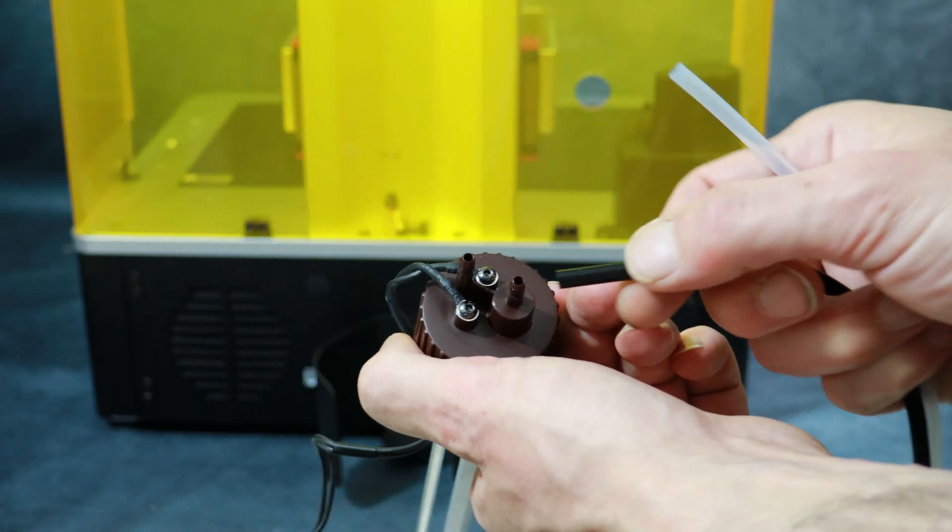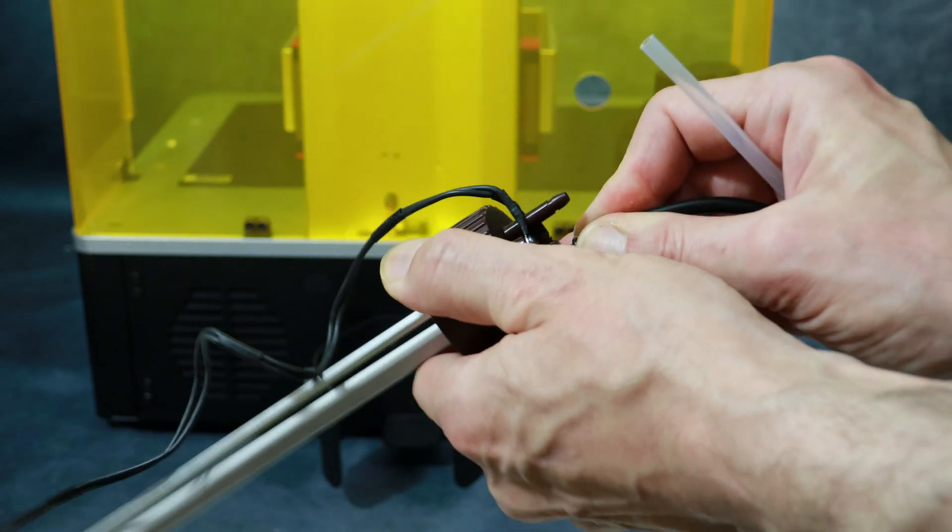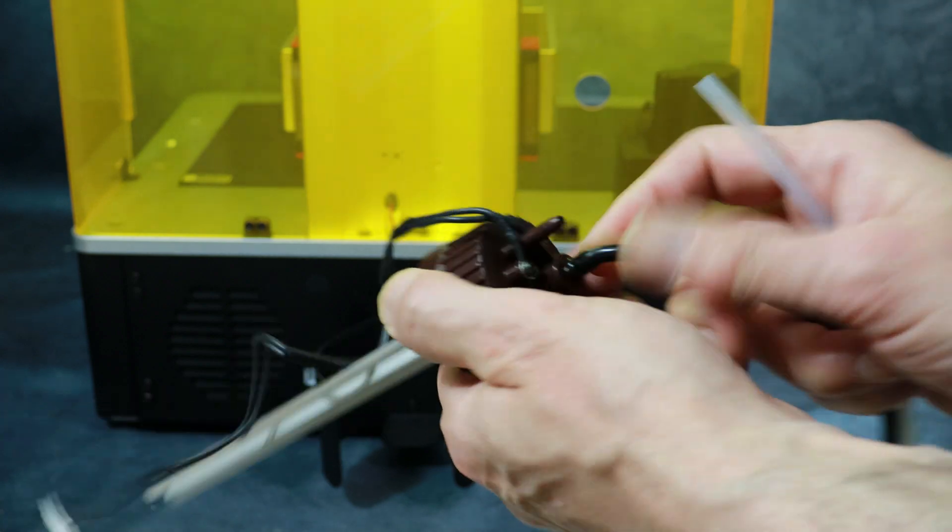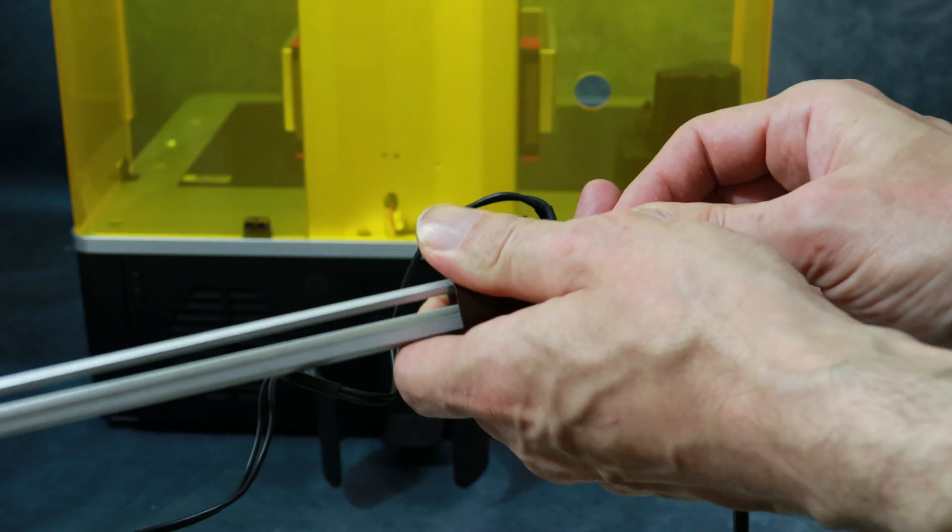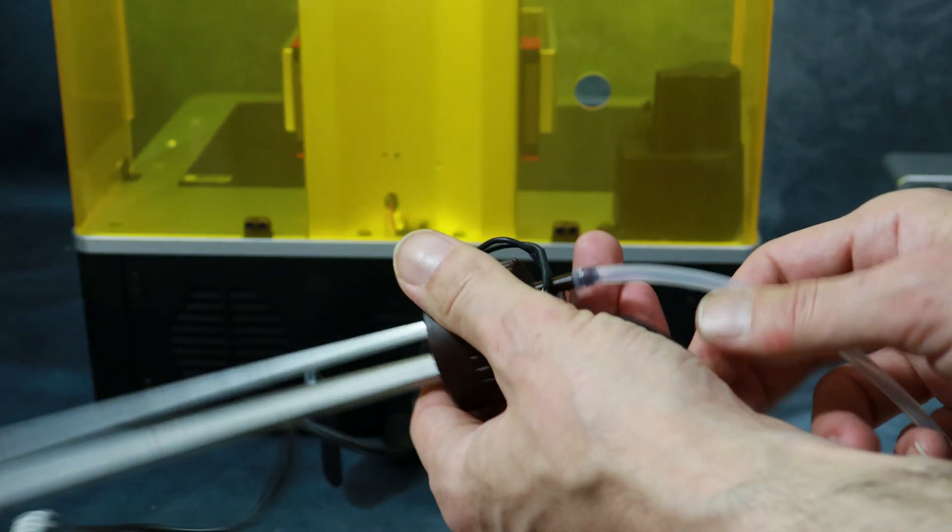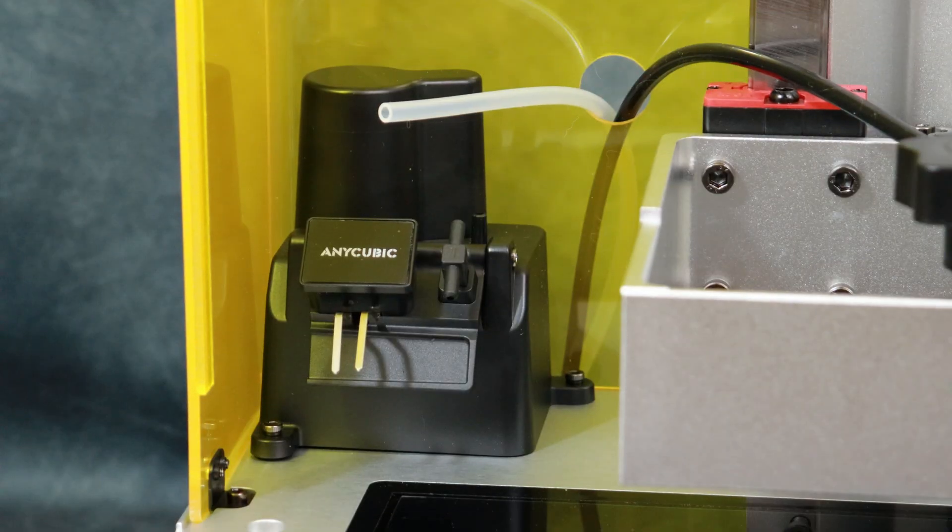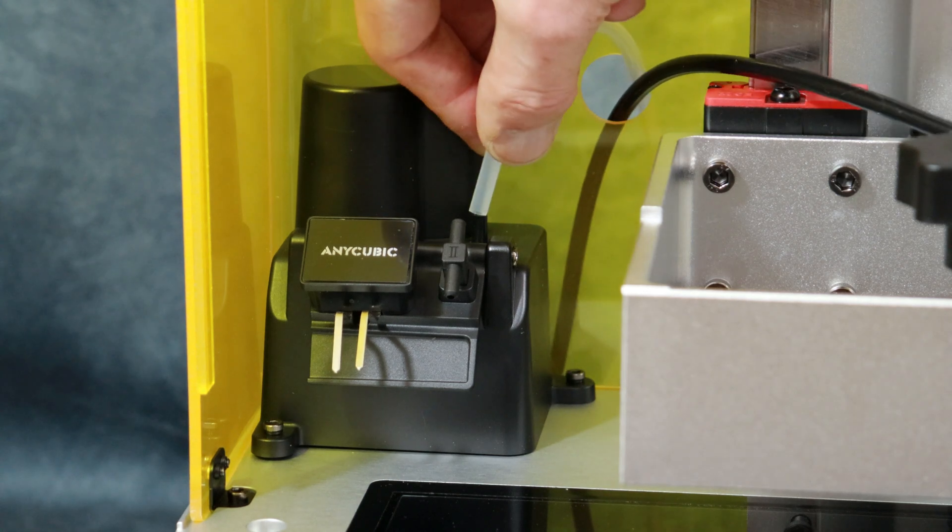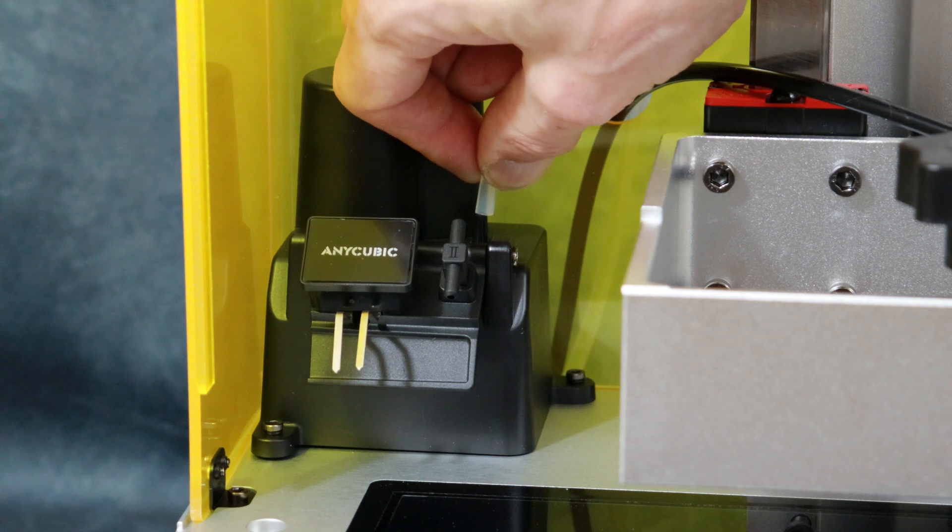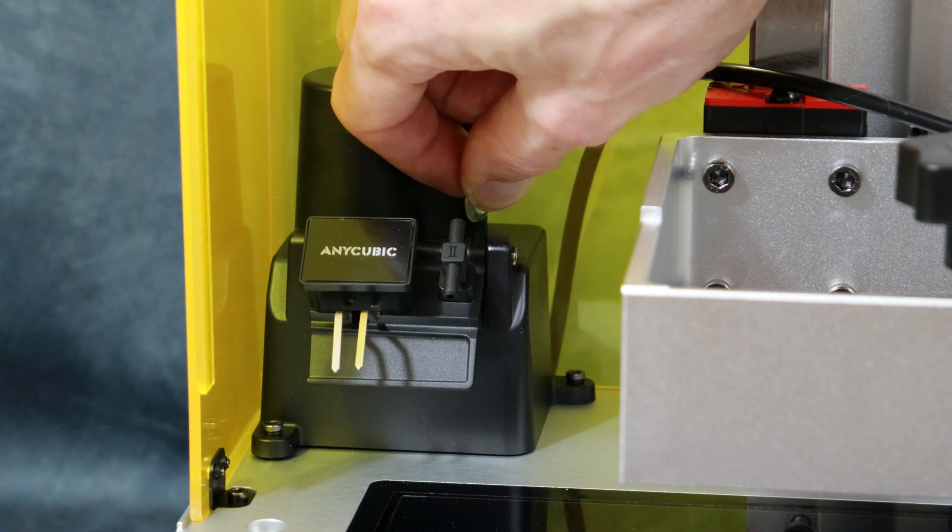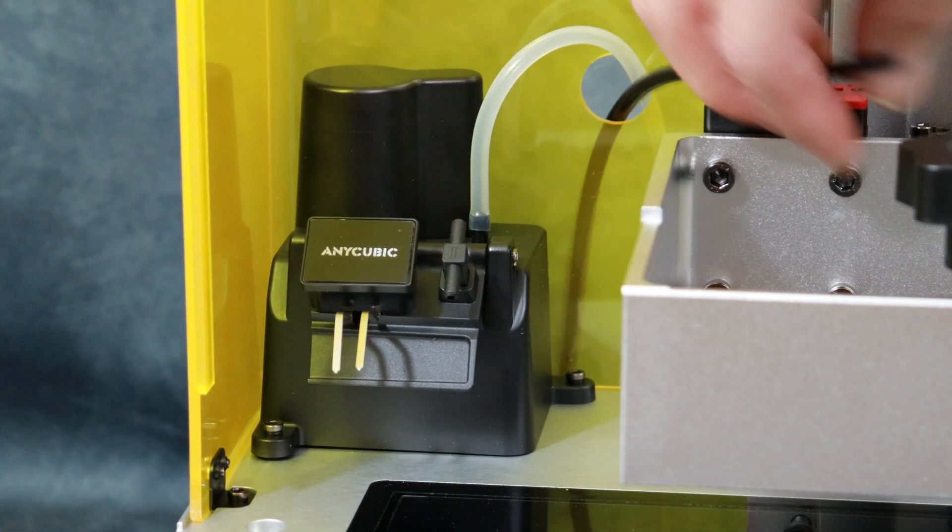The next thing we're going to do is install the tubes onto the auto fill lid. Be sure to put the black tube on the center nozzle and then the clear tube on the outer. The outer nozzle pumps air into the bottle and the resin flows through the black tube to the printer. Next thing we're going to do is install the hoses onto the auto fill system itself. The clear tube goes onto the base unit itself where the air pump is and the black tube goes onto the little nozzle that pours into the vat. Make sure they're tight and secure.